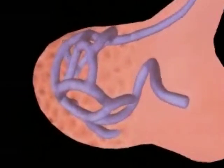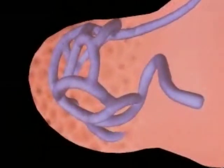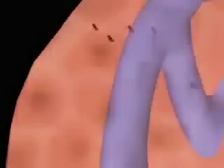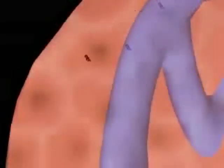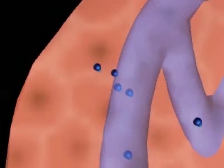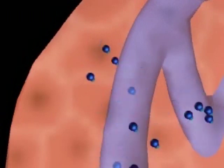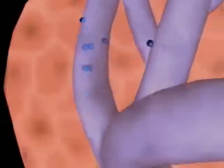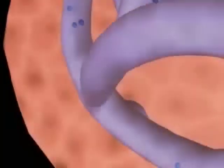TRH is secreted into the hypothalamohypophyseal portal vessels and carried into the anterior lobe of the pituitary gland, where it stimulates cells that make thyroid stimulating hormone, TSH. TRH stimulates the release of TSH from the anterior lobe of the pituitary.